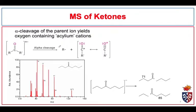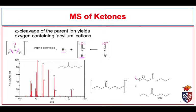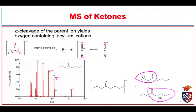Mass spectra of ketones are dominated by a few characteristic peaks. One key feature is heterolytic alpha cleavage of the alkyl groups bonded to the carbonyl carbon, giving an alkyl radical and an acylium cation. We get cleavage from both sides of the carbonyl group. For an unsymmetrical ketone like 4-octanone, we get one fragment due to an acylium cation at m/z 71 and another from cleavage on the other side giving an acylium cation at m/z 85, and we see peaks at both 85 and 71.